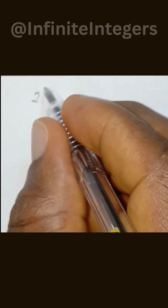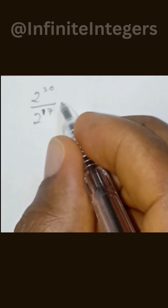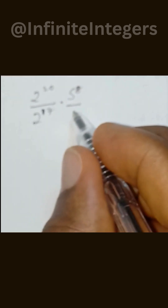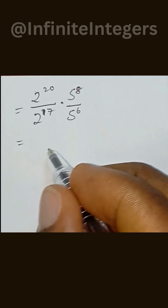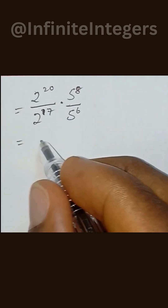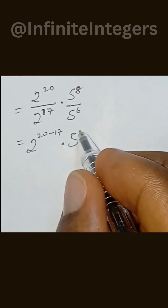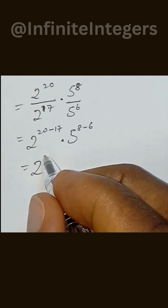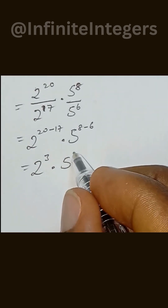So splitting that, we have 2 to the power of 20 over 2 to the power of 17, then multiply by 5 to the power of 8 over 5 to the power of 6. Using the rule of exponents, we have 2 to the power of 20 minus 17, multiply by 5 to the power of 8 minus 6, and it is equal to 2 to the power of 3 multiply by 5 to the power of 2.